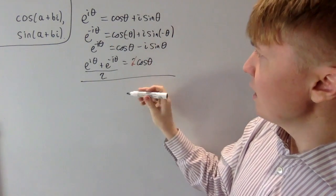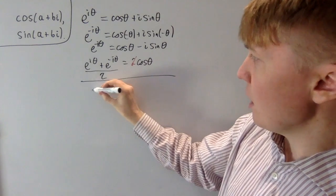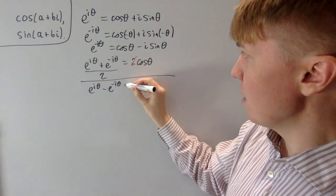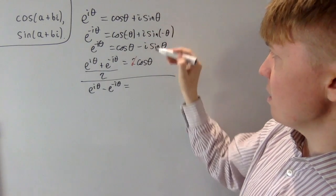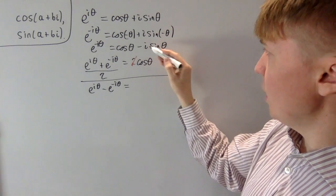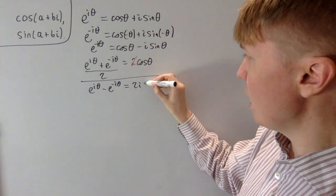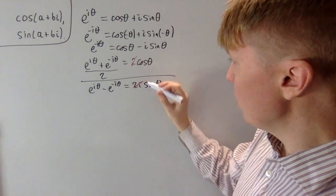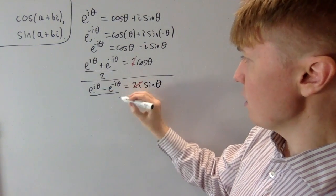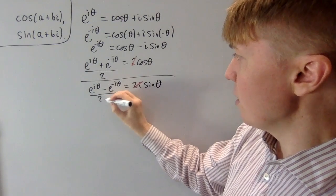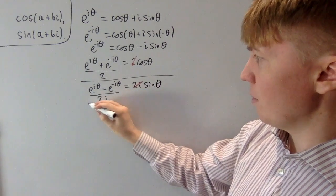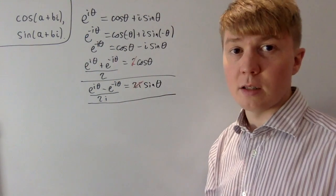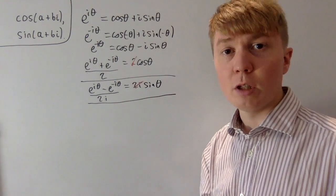We can do something very similar if we take the first equation and subtract the second. We get e to the i theta minus e to the minus i theta, which equals i sine theta minus minus i sine theta, so two i sine theta. Then dividing through by two i, we get a nice expression: sine theta equals e to the i theta minus e to the minus i theta, all over two i. This is how we'll work with cos and sine with complex numbers.